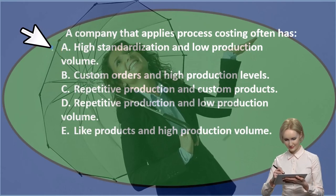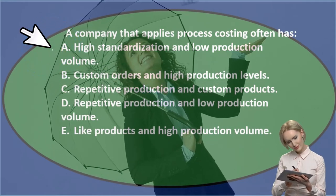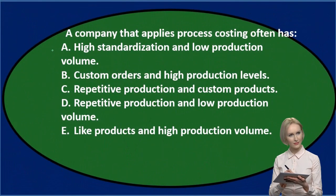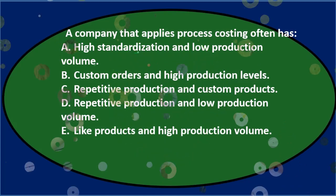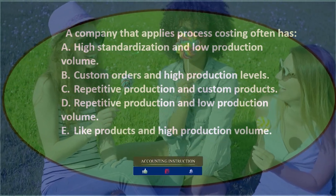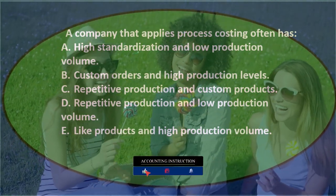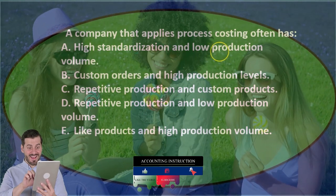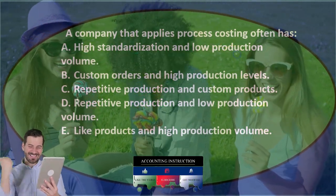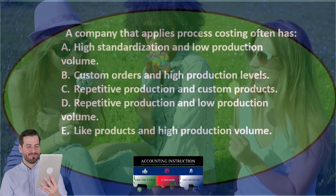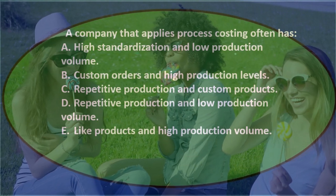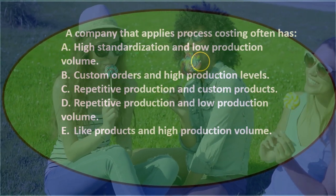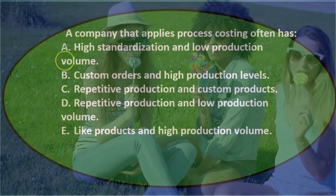Option A: high standardization and low production volume. High standardization seems right for process costing — making candy or taffy all standardized — but low production volume doesn't fit, because the whole point of standardizing is to increase production volume and make a lot of identical items. So these two don't go together.